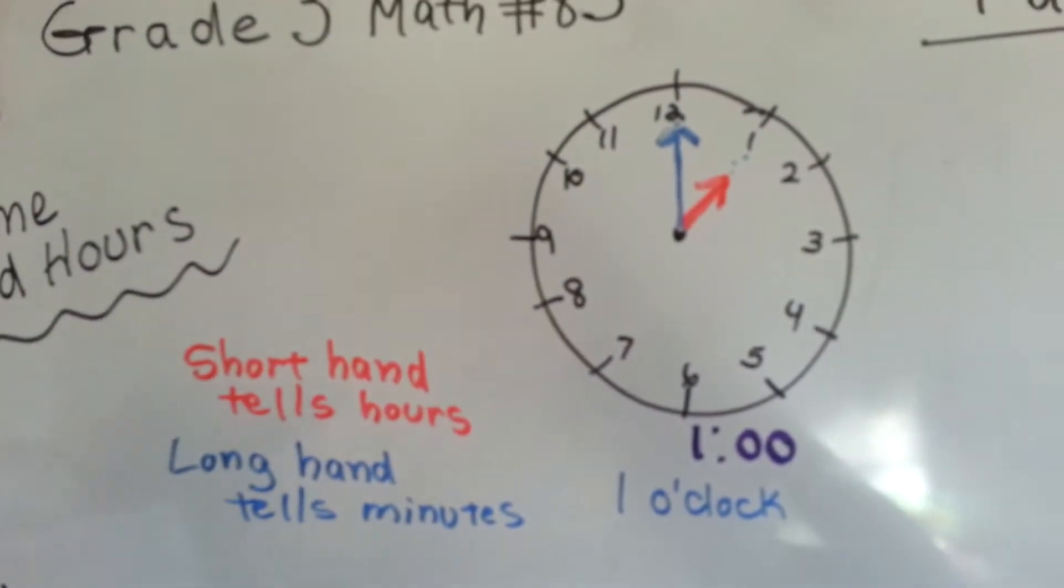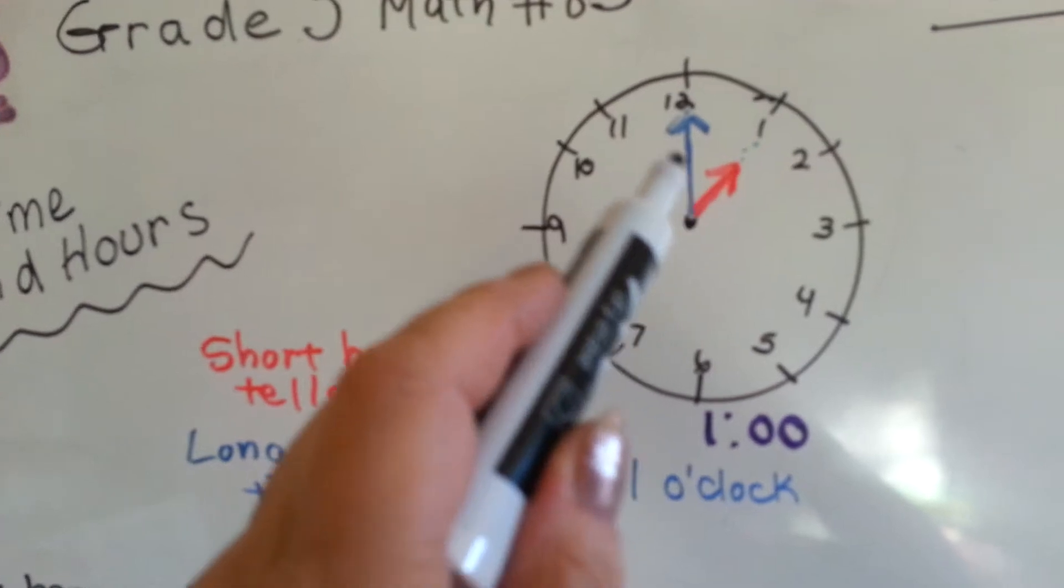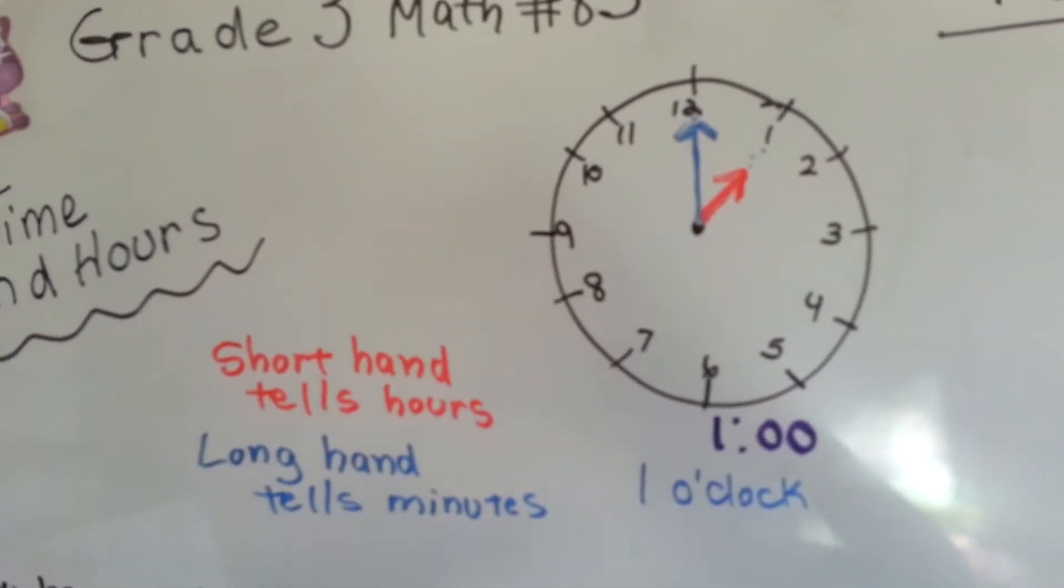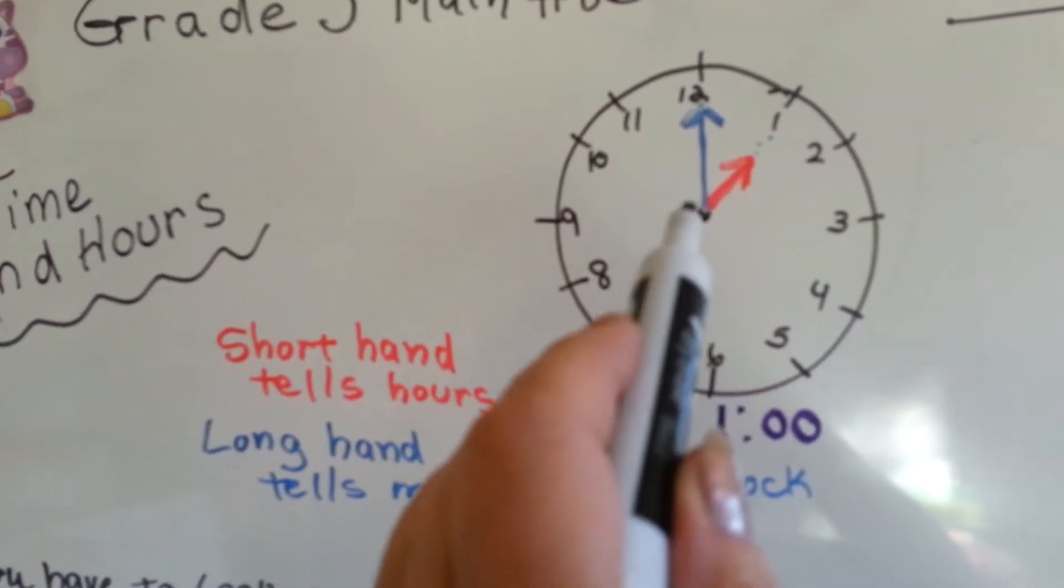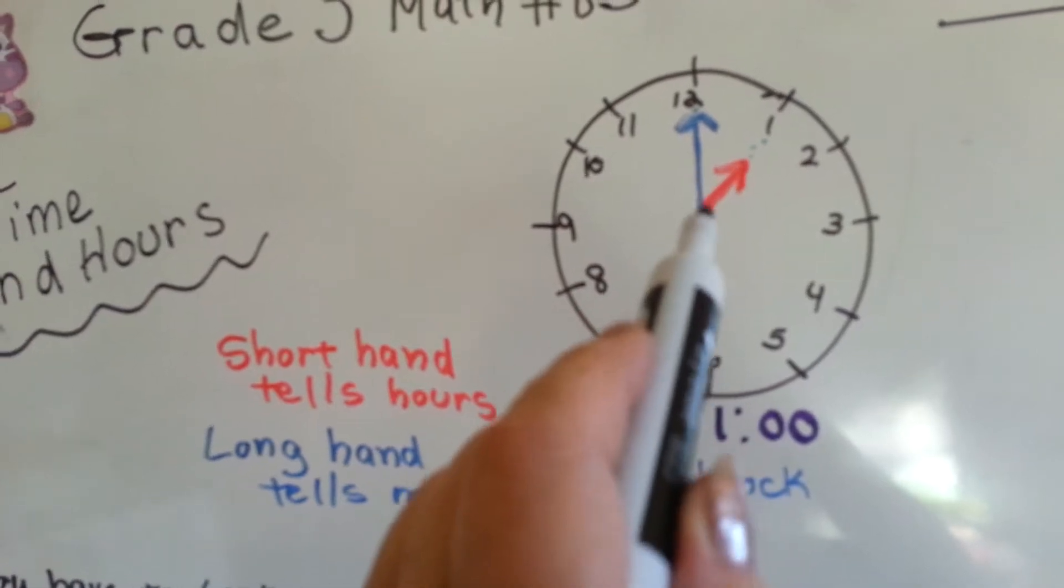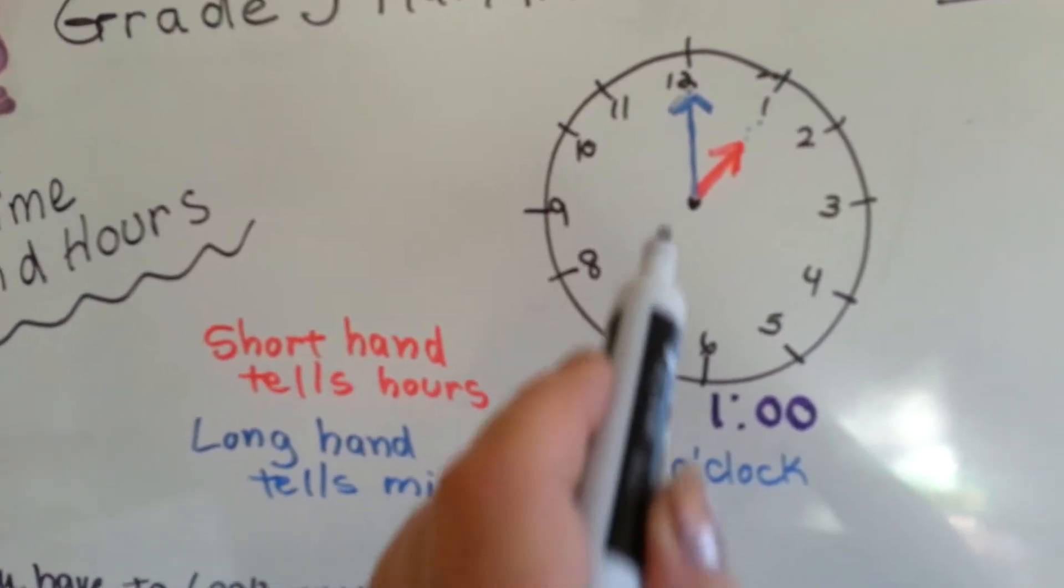On a clock, there are two hands. These are called hands. The short one, the red one, tells you what hour it is, and the long hand tells you the minutes.